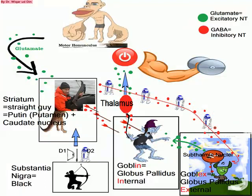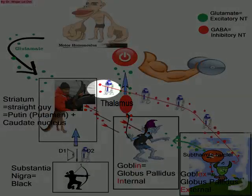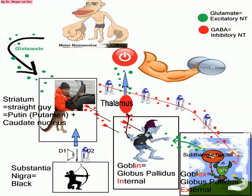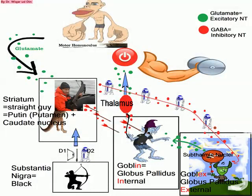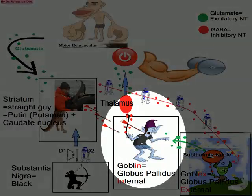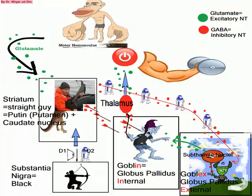The inhibitory pathway stops movement rather than initiating it. It is initiated when the D2 robot is sent to kill Goblex. When Goblex is killed, it lets go of its balloon, which flies away. The goblin watches this and becomes even more protective of his own balloon — like 'my precious' — and cannot let go, so movement is inhibited.